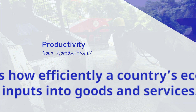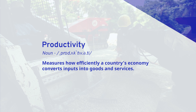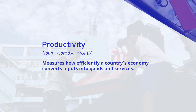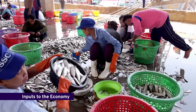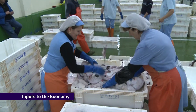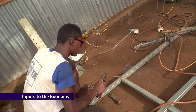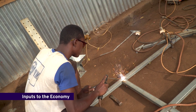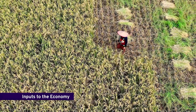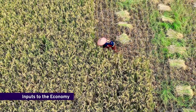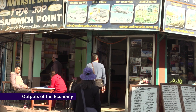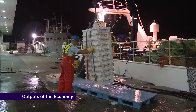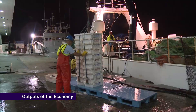Productivity is a concept in economics to measure how efficiently a country's economy converts inputs into goods and services. Inputs include the labor undertaken by workers, the materials and energy used in the production process, and capital inputs such as machines, buildings, or land. The outputs are the products or services that we consume in our daily lives or export to other countries.